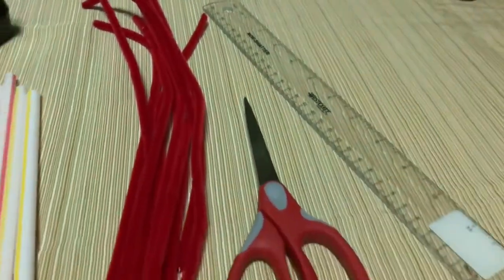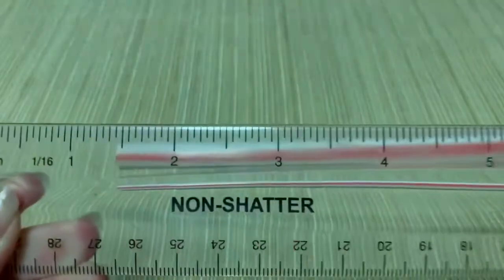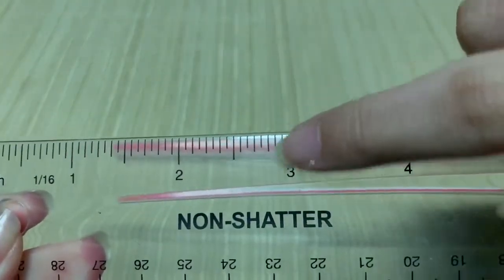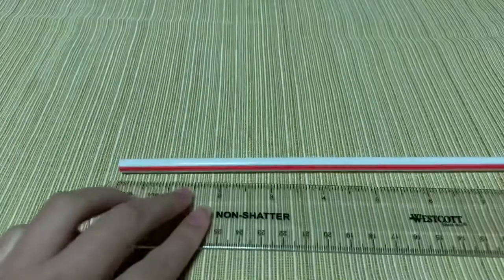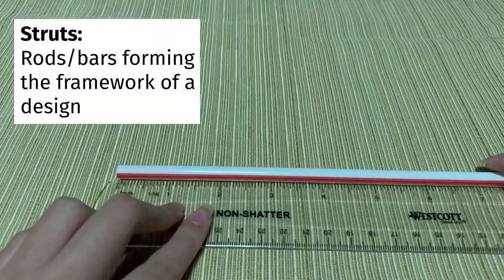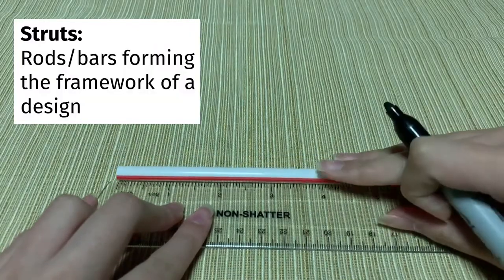If you follow our measurements, you'll need 18 straws. The first step is to turn your straws into two groups of strut A and strut B. Struts are rods or bars that form the framework of a design.